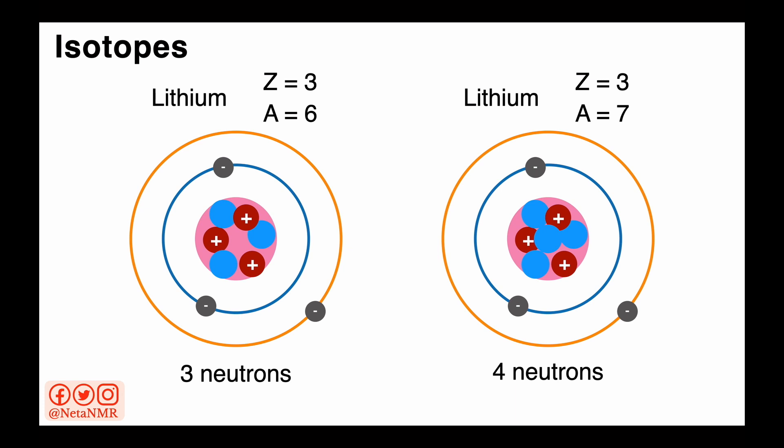These different forms of the same element that have different numbers of neutrons in the nucleus are called isotopes. Lithium 6 and lithium 7 are two of the lithium isotopes, both of them stable isotopes. Lithium 7 being the most abundant lithium isotope.